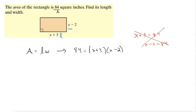Anytime you have x squared — which is what we actually have here if we multiply these together — you usually want 0 on the other side. So let's FOIL these out and see what happens. Foiling these together we get x squared minus 2x plus 3x, which is plus x, minus 6. All of this equals 84.